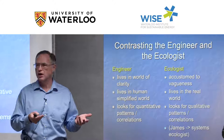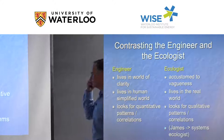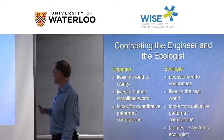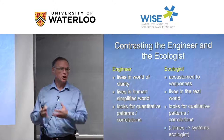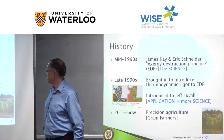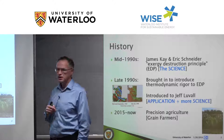Engineers turn quantitative patterns into laws and use those to predict outcomes. The ecologist lives in the real world where simplifications don't exist in the same way — they look for qualitative patterns and correlations in complex, non-simplified systems. James Kaye was both an ecologist and systems engineer who brought both worlds together.